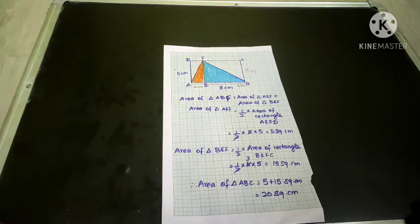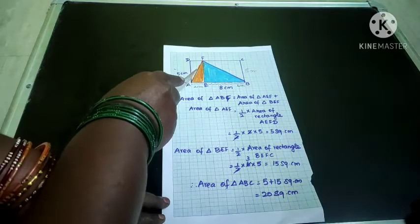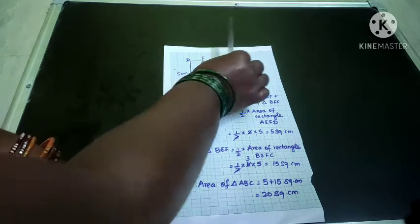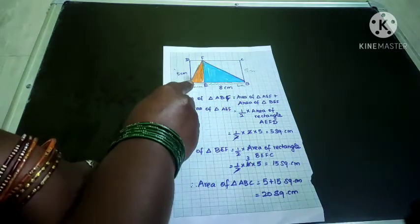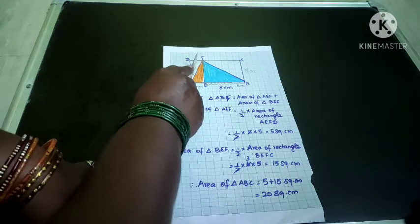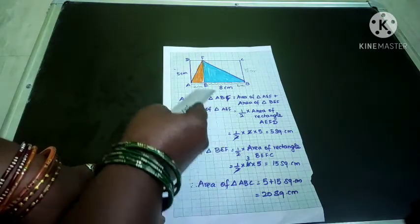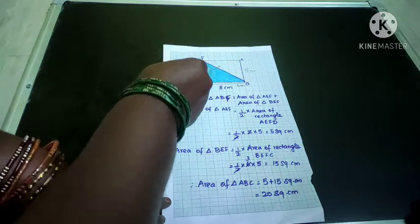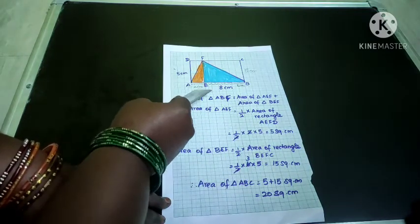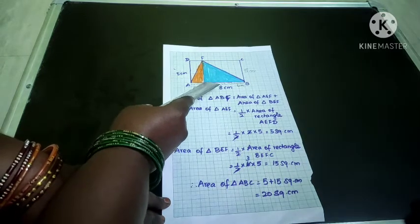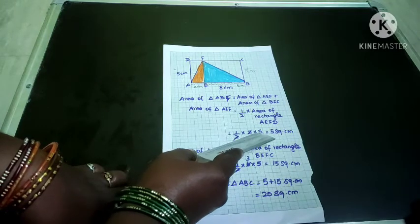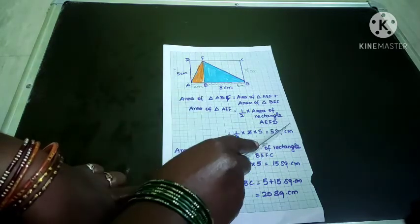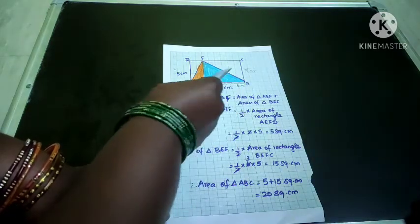First we are going to find out the area of triangle AEF. This triangle is half of its rectangle. Area of triangle AEF is equal to half of area of rectangle AEFD. Here the length is 5 centimeters and breadth is 2 centimeters. So half into 2 into 5 — the 2s cancel — and the remaining is 5 square centimeters. So the area of triangle AEF is 5 square centimeters.